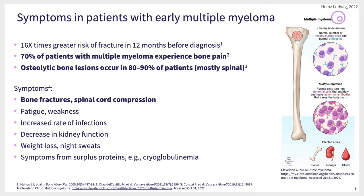Some patients present with kidney impairment, some with acute renal impairment. Weight loss is not so frequent. Night sweats usually occur when patients suffer from infections. And of course, there may be symptoms from surplus of proteins, such as hyperviscosity syndrome.